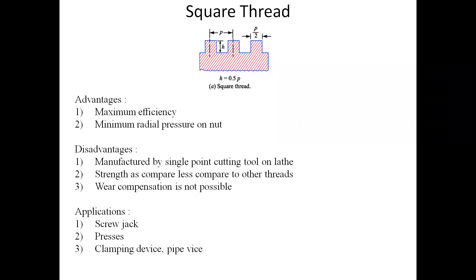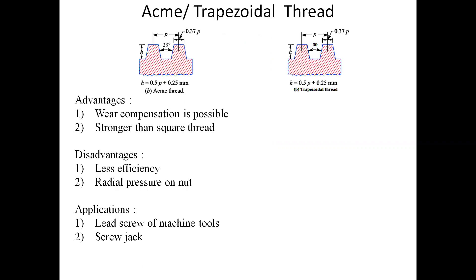As far as applications are concerned, square threads are used in screw jacks, presses, pipe vises, clamping devices, etc. However, the square thread has limited application as far as strength is concerned. If more strength is needed, we need to go for another type of thread profile. The next thread profile, which overcomes the disadvantages of the square thread, is the ACME or trapezoidal thread.